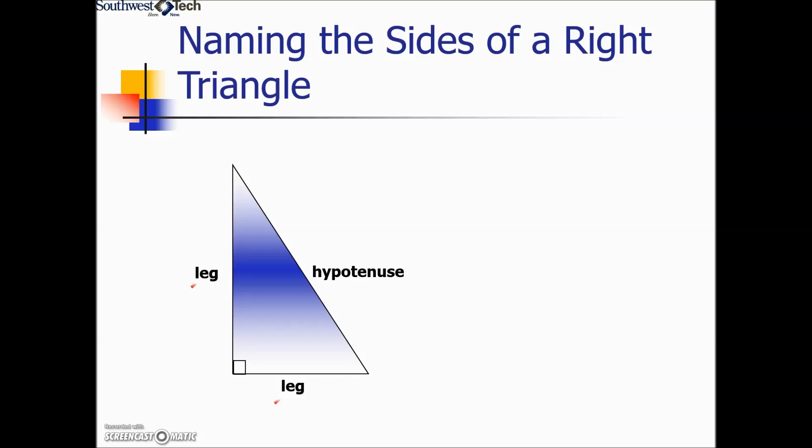From now on we will use three words to identify each side of the right triangle, and those three sides are hypotenuse, opposite, and adjacent.